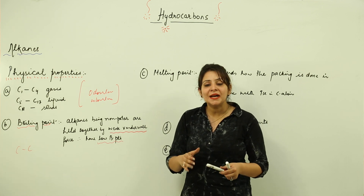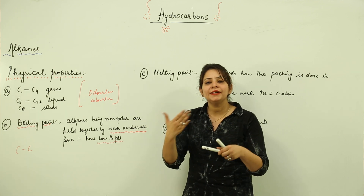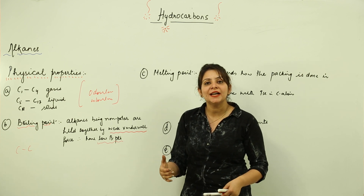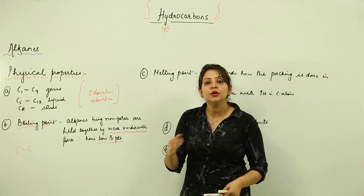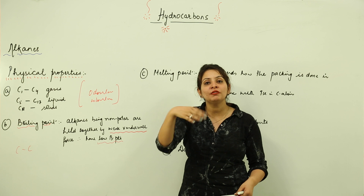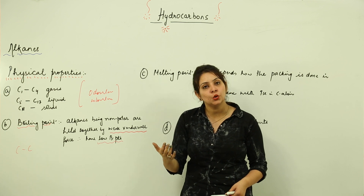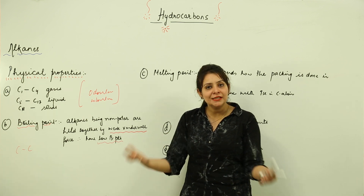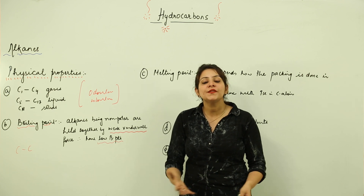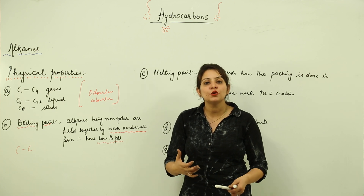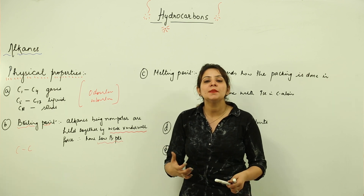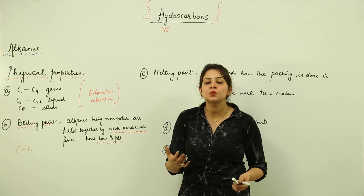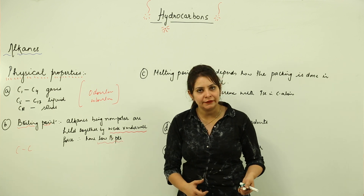As we move from methane to ethane to propane to butane, the boiling point goes on increasing as the number of carbon atoms increases. The reason is that with an increase in surface area, the van der Waals forces increase, which increases the intermolecular force and therefore raises the boiling point.